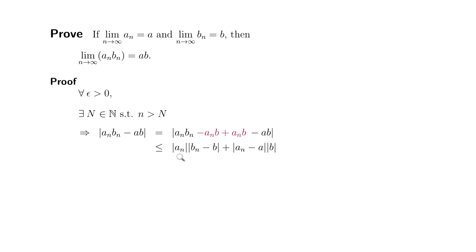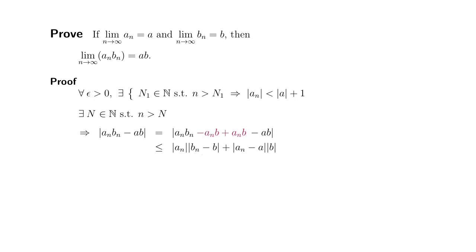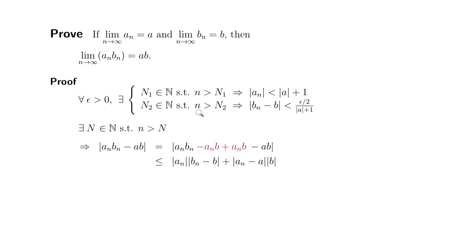Since we know that the sequence aₙ converges to a, we can say the following. We know that there exists capital N1 such that as long as n is greater than capital N1, we can make sure that the absolute value of aₙ is less than the absolute value of a plus 1. And since the sequence bₙ converges to b, there exists capital N2, which is a natural number, such that as long as n is greater than capital N2, we can make sure that the absolute value of bₙ minus b is less than epsilon over 2 divided by absolute value of a plus 1.